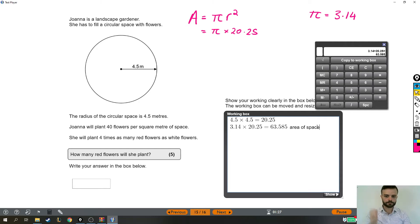Now we're told that Joanna will plant 40 flowers per square meter of space. And we have 63.585 square meters. Perhaps I can even make it clearer. The units of this are meters squared. That's meters squared, and that's the area of the space. So she can put 40 flowers in one square meter of the space. So if she had two square meters, then she could put two lots of 40 flowers. If she had three square meters, she could do three lots of 40 flowers. We've got 63.585 square meters.